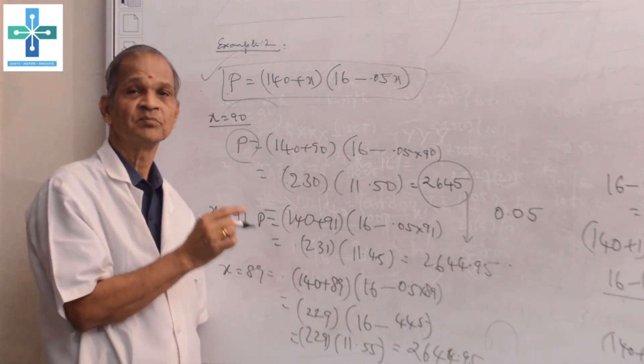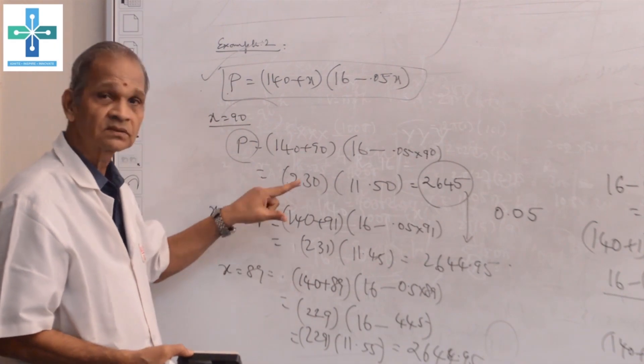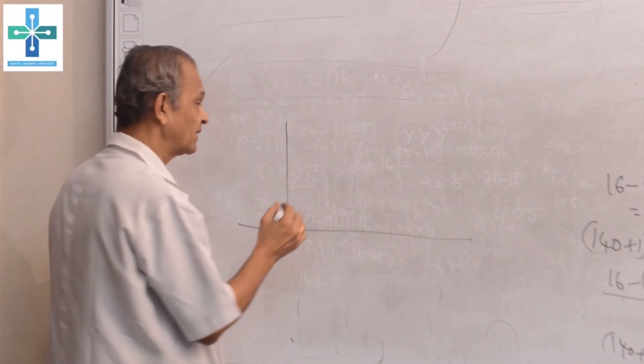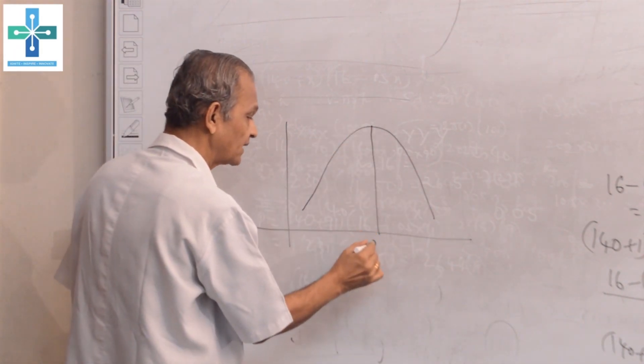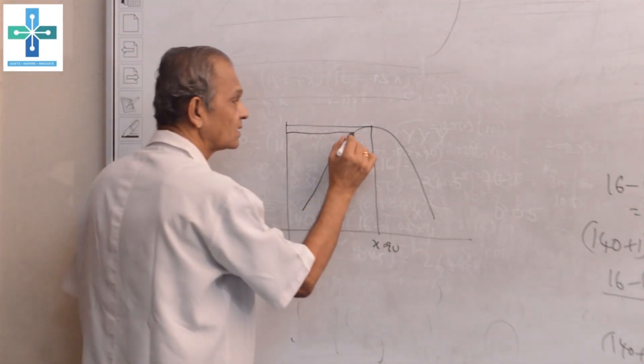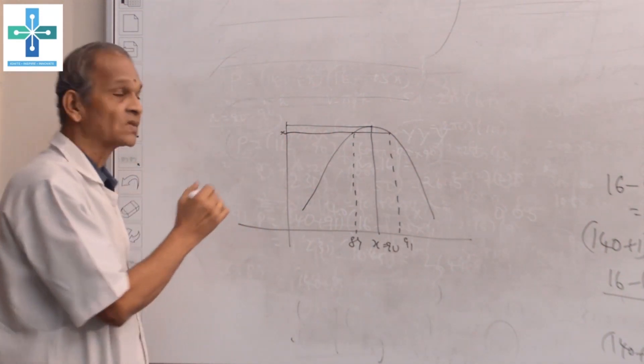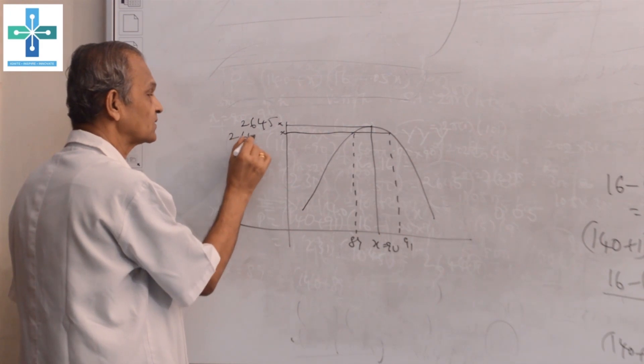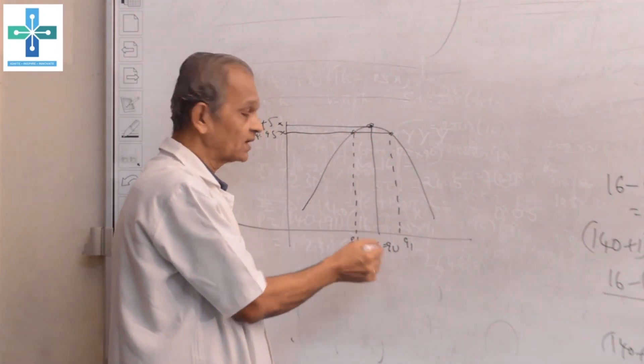That is why calculus plays a very important role in mathematics. These are two examples. There are so many examples we cannot give here. The graph will be like this. The profit will increase like this. At one stage, when X = 90, we get the maximum profit. One less or one more, 89 or 91, the profit is 2,644.95 on both sides. Therefore, to identify this peak point, the maximum point, we are using calculus.